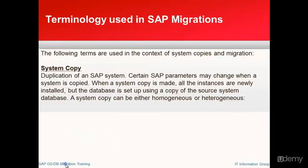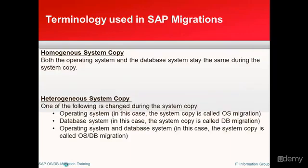First, what is a system copy? System copy basically stands for duplicating the system. For example, you have an SAP system and you need to create another SAP system — that's where the term duplication is used. When a system copy is made, all instances are newly created but the database is set up using a copy of the source system database, by taking an export or database backup of the source system.